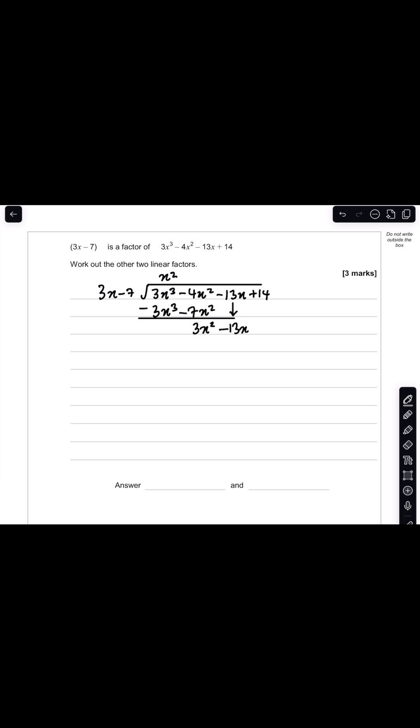And so now I'm going to be dividing 3x squared by 3x, and that will give me plus x. I multiply x by 3x minus 7, so x times 3x is going to give me 3x squared, and x times minus 7 is just minus 7x. And then I need to repeat the same process.